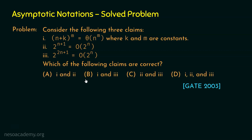We need to identify the correct option. We will take each claim one at a time and analyze it properly. The result of the analysis will tell us which of these claims is correct. Let's dive into the solution and take claim 1 first.